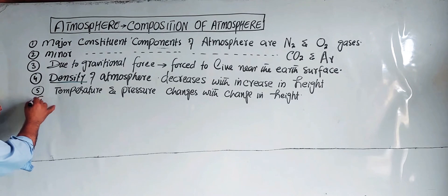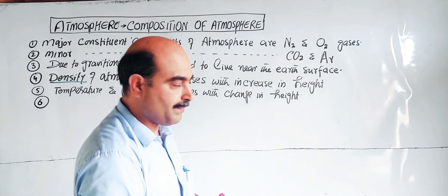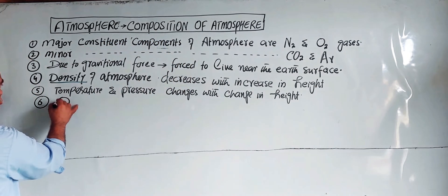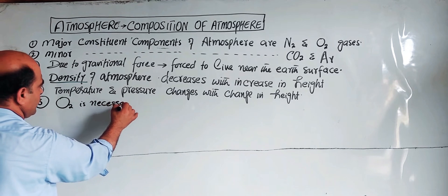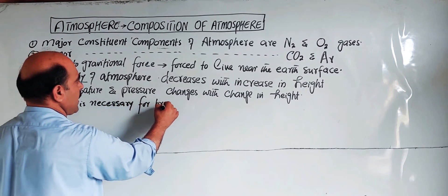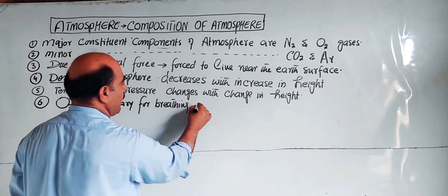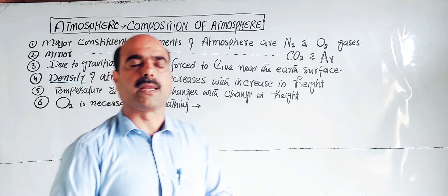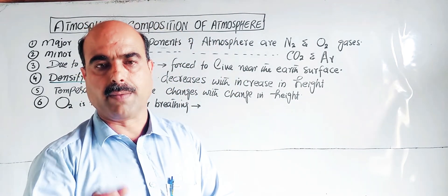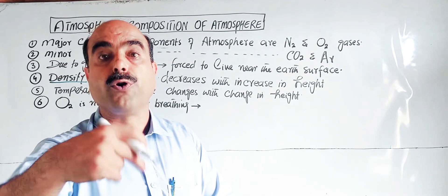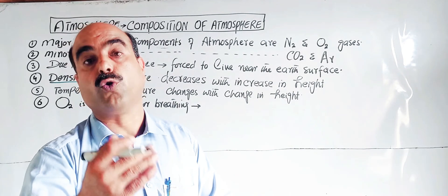Point number six: Oxygen. Importance of oxygen, which is one of atmosphere's major components. Oxygen is necessary for breathing. Without oxygen, life is impossible. The oxygen from the lungs diffuses into the blood, and then oxidizes food. Glucose reacts with oxygen to produce carbon dioxide and water.